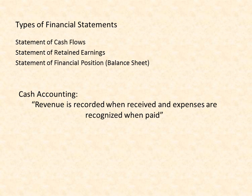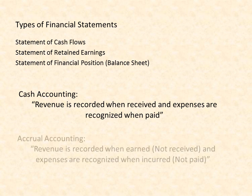Third is the statement of financial position, also known as the balance sheet. Here the assets, liabilities and equity of a company are listed. This statement is typically written using the accrual accounting system. Accrual accounting means that revenue is recorded when earned and expenses are recognized when incurred. For example, a job that has been performed but has not yet been paid for would be recorded. Conversely, expenses such as utilities would be recorded despite a bill not being received yet.